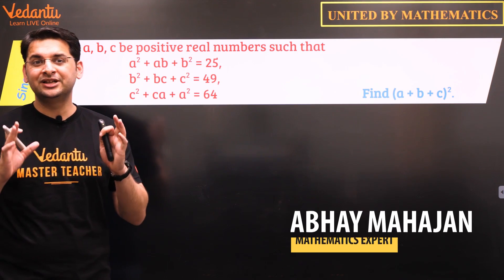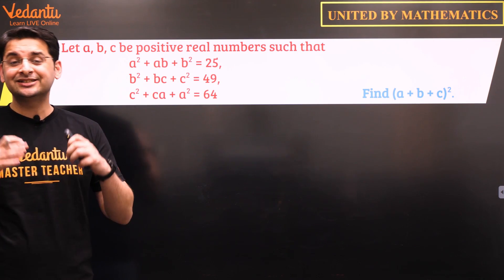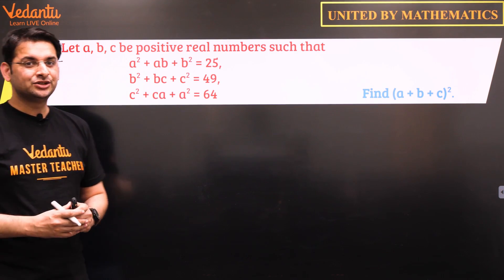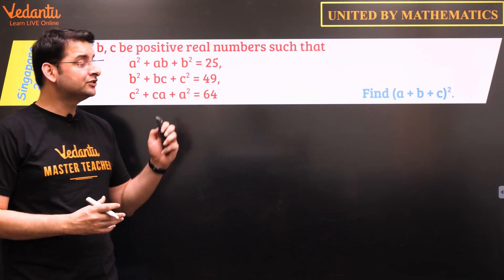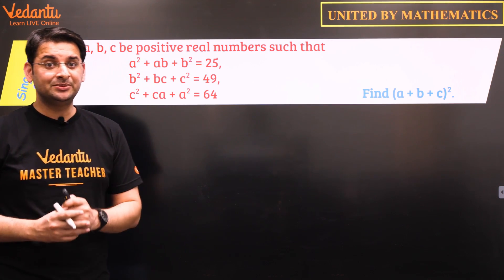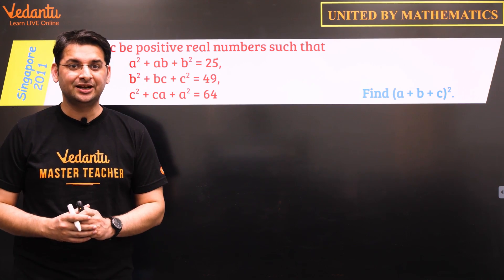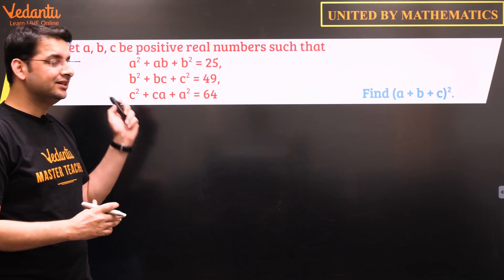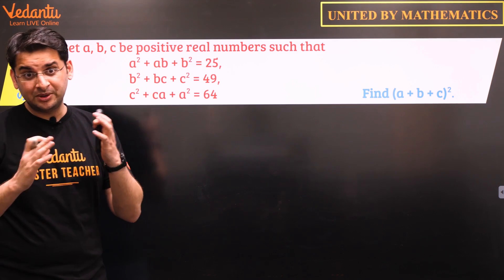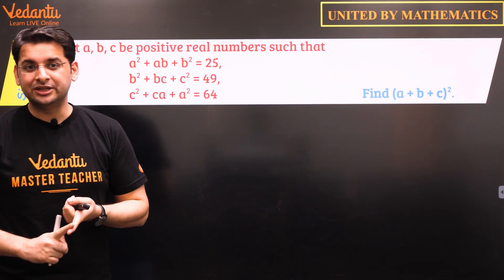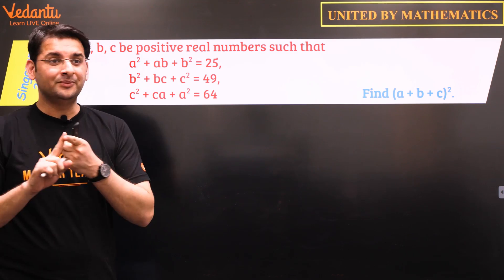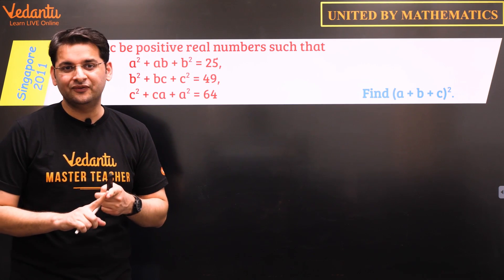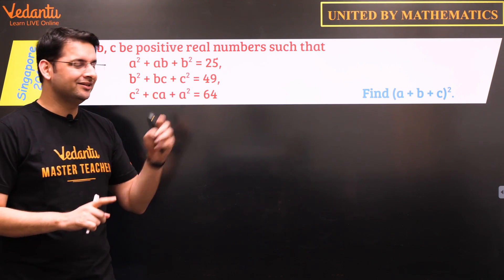Hi all, this is Abhay Mahajan and welcome to this series called United by Mathematics, wherein I discuss problems related to Olympiads of your country. Let us discuss this question: ABC are positive real numbers such that A²+AB+B²=25, B²+BC+C²=49, and C²+CA+A²=64. We need to find (A+B+C)². This is a medium-level Olympiad question from the Singapore Junior Olympiads, and one of my favorites because there are two methods — we'll use the more elegant geometric approach.